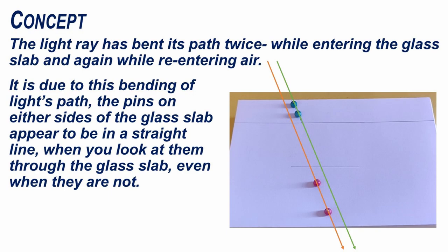The light ray has bent its path twice while entering the glass slab and again while re-entering air. It is due to this bending of the light's path that the pins on either sides of the glass slab appear to be in a straight line when you look at them through the glass slab even when they are not.